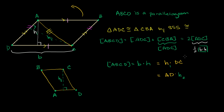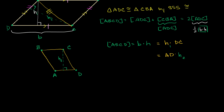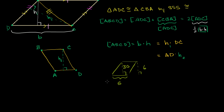So if someone gives you a parallelogram and tells you this length is 5 and this distance — the height — is 6, then the area of this parallelogram would be 5 times 6. I drew the altitude outside of the parallelogram, but I could have drawn it inside as well — that would also be 6. So the area of this parallelogram is 30.